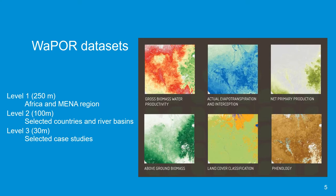The main layers available at each level include biomass water productivity, actual evapotranspiration and interception, net primary production, above-ground biomass and phenology, which represents the cropping season. In addition, a land cover classification based on comparing this data is available.